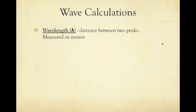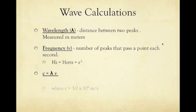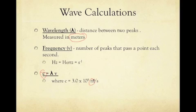To do wave calculations to figure out what frequencies we have or what wavelengths we have, we use the equation c equals wavelength times frequency. Wavelength is the distance between two peaks and it's always measured in meters. In this equation, c is the speed of light, which is meters per second, so those two things have to line up. In a problem, if it gives you something besides meters, you have to convert it to meters. Frequency is the number of peaks that pass a point each second, and the unit we use there is hertz or inverse seconds.